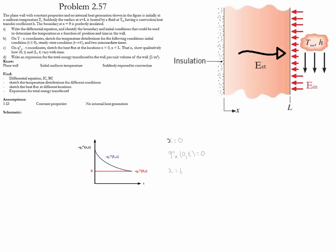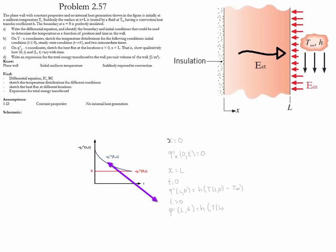At x = L we have two conditions: when time equals 0 and when time is greater than 0. At t = 0 convection takes place, so the heat flux at position L at time 0 equals h times [T(L,0) minus the fluid temperature]. When time is greater than 0, the heat flux at x = L equals h times [T(L,t) minus T∞].